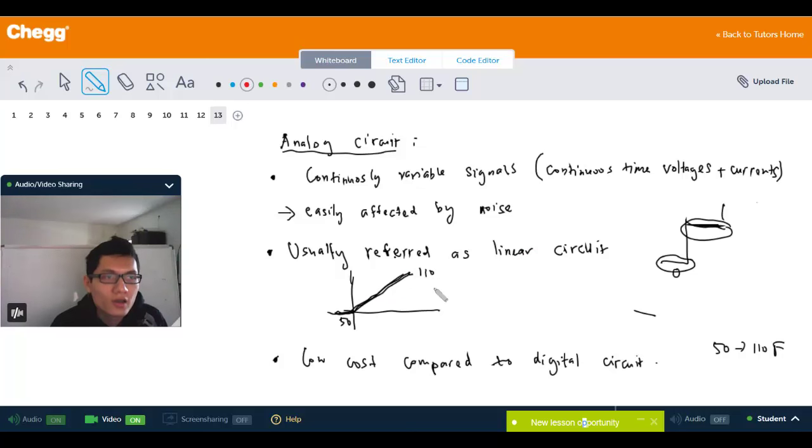is just a picture for you to imagine easily. With a digital circuit, it only takes two values: like 110 right here, which is from 70 to 110, and then zero, which is from 50 to